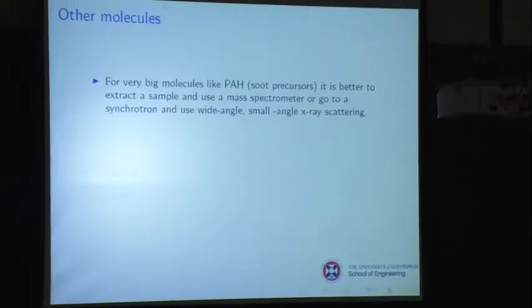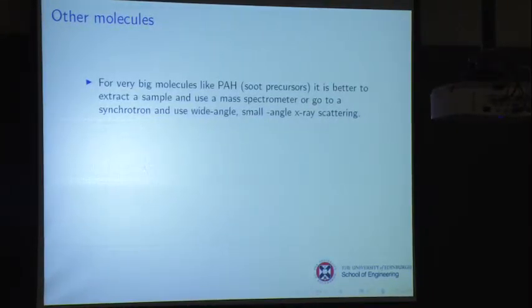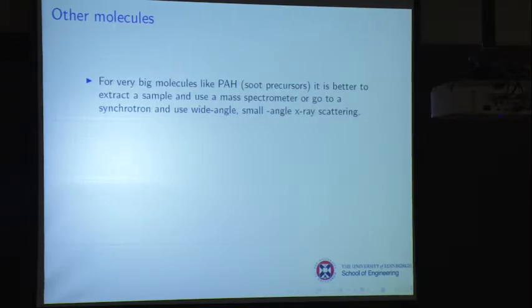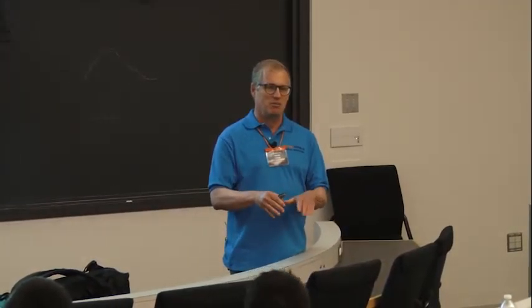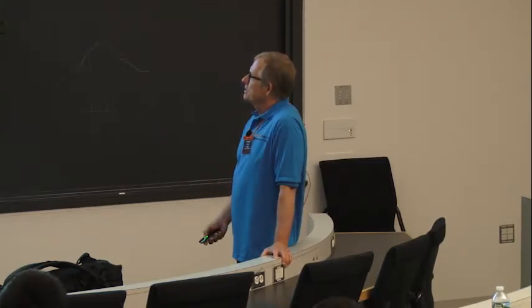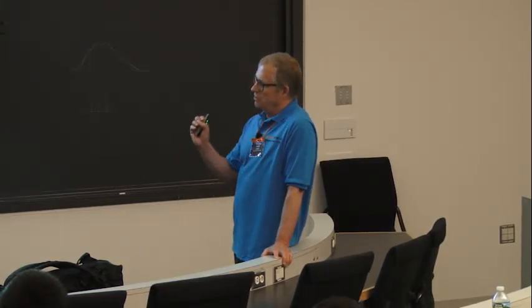For really big molecules like soot precursors — PAHs — people discovered that green light from a frequency-doubled YAG or an argon laser would produce fluorescence from PAHs. But the trouble is you can also cause laser-induced incandescence of soot at exactly the same time, creating interferences so you're not sure what you're really looking at. Honestly, if you want to look at something really big like that and want to know the concentration, it's probably best to just sample it and use a mass spectrometer — there's a point where laser diagnostics are not all that helpful.